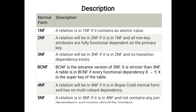Fourth Normal Form requires the table to already be in BCNF format, and it does not allow multi-value dependencies. Fifth Normal Form requires the table to be in Fourth Normal Form and does not allow join dependencies.